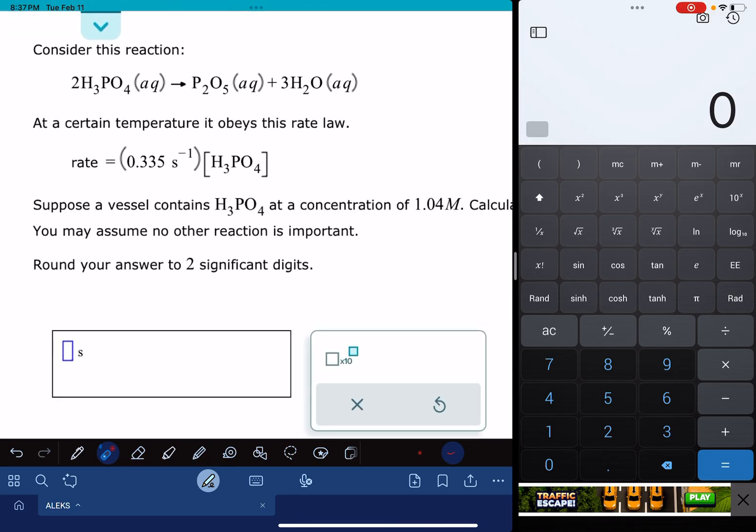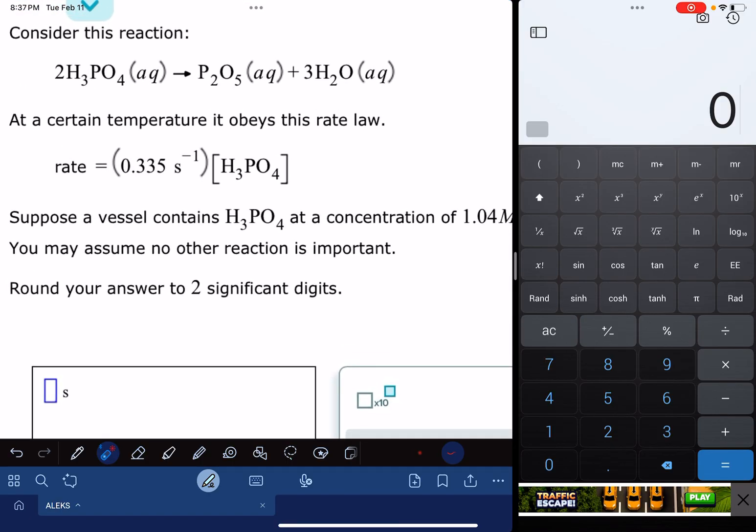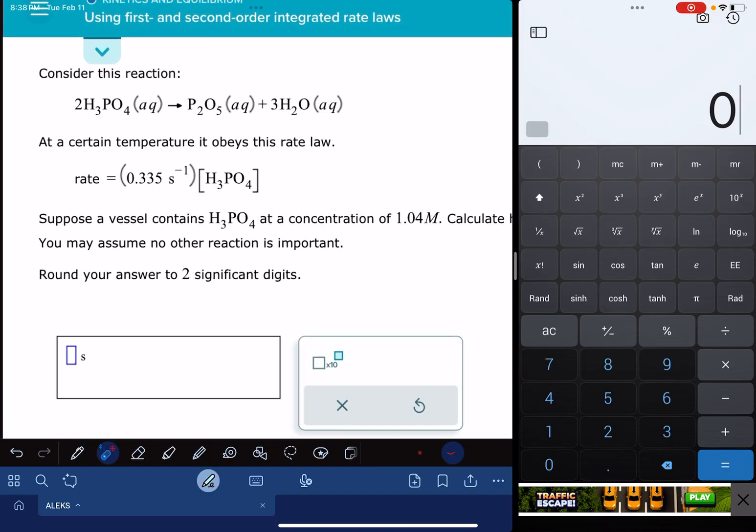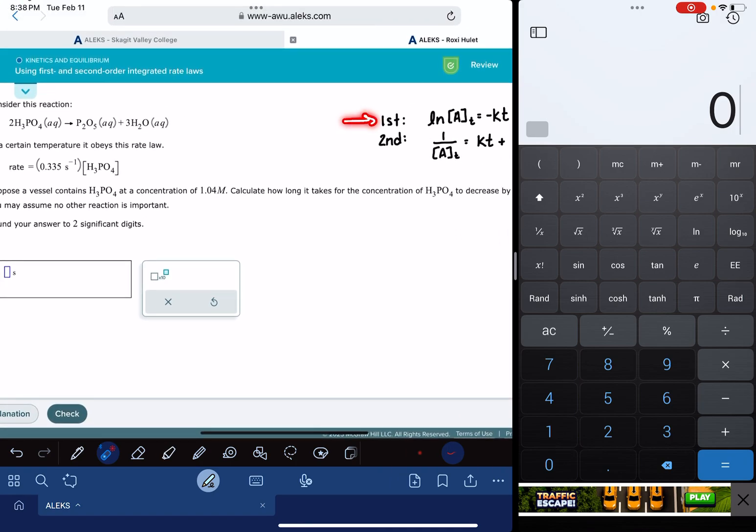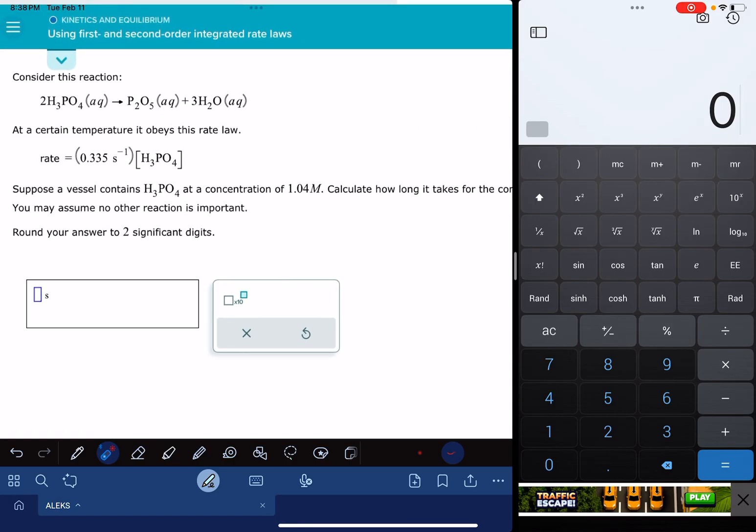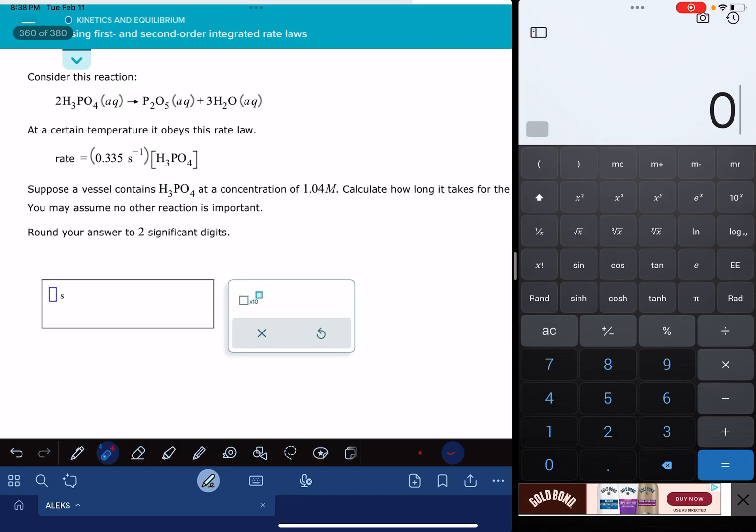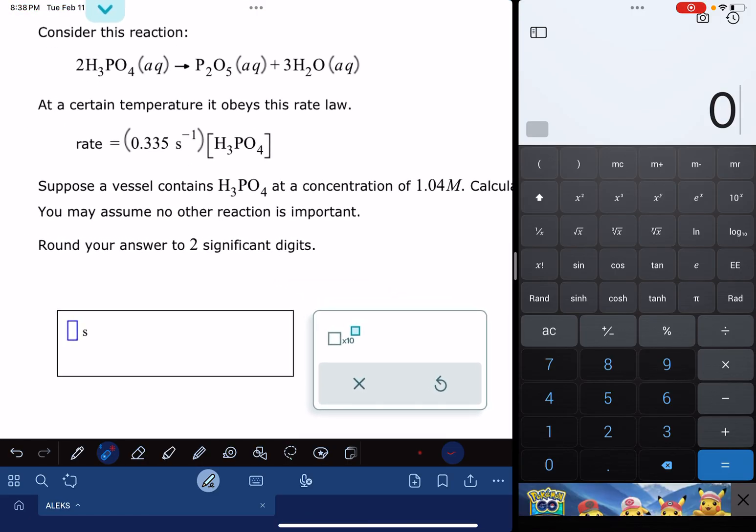Now, the easier versions of this problem are going to explicitly tell you this is a first order reaction or a second order reaction. I'm looking at one version of the problem on my computer, not on my iPad, and it says this reaction follows first order kinetics, or a problem might say this reaction follows second order kinetics. That information tells you which integrated rate law to use. This problem, this version of the problem, if you read through it, it does not say anything about first or second order. So if you have that version of the problem where it's not telling you the order of the reaction, then you will be given a rate law.